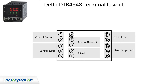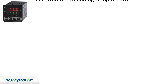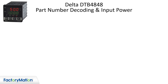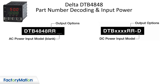The terminal layout also shows alarms and communications. The alpha characters of the part number designate the controller input power and output configuration. The first two alpha characters are the outputs, and the last character is for AC or DC input power.